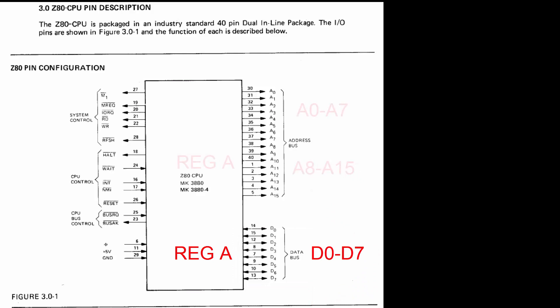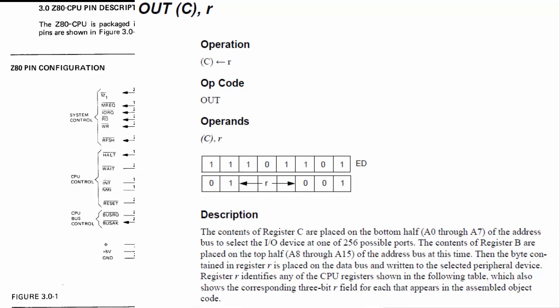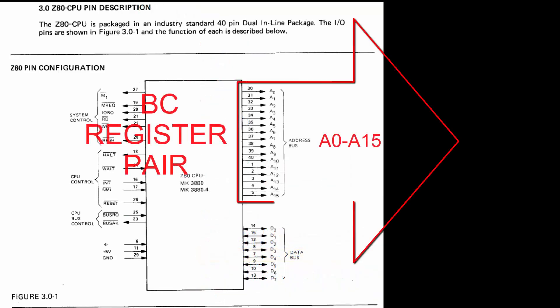So this high byte, A8 to A15, is there for the latching but it typically goes unused. For an output instruction using indirect addressing via the C register — for example, OUT (C), A — the Z80 puts the contents of the C register onto the low address byte as the port address, just as we would expect, but rather than the accumulator, the B register is placed on the high byte. In other words, the BC register pair is put onto the address bus during an indirect addressing port output. Again, that's data that's there for the latching.